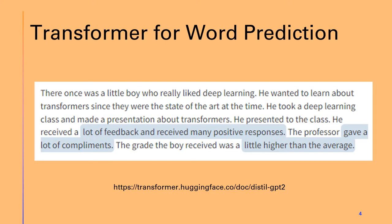In this language processing example, a transformer network is used to write parts of a story. The words that are not highlighted are an input set for the transformer. The words highlighted in blue are the outputs of the transformer network. By utilizing attention and knowing the correlation between all words in this set of inputs, as well as previous inputs, the model is able to write parts of the story.